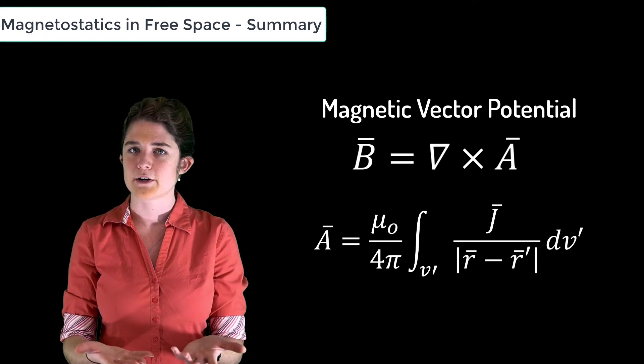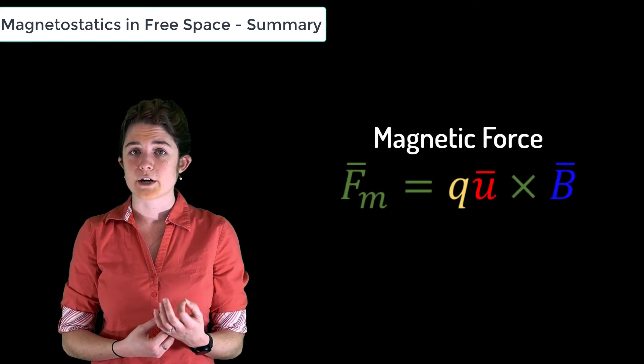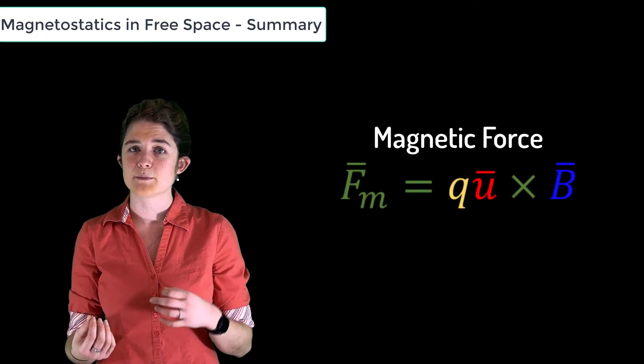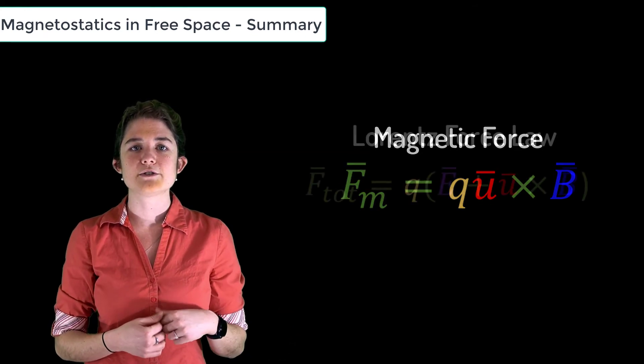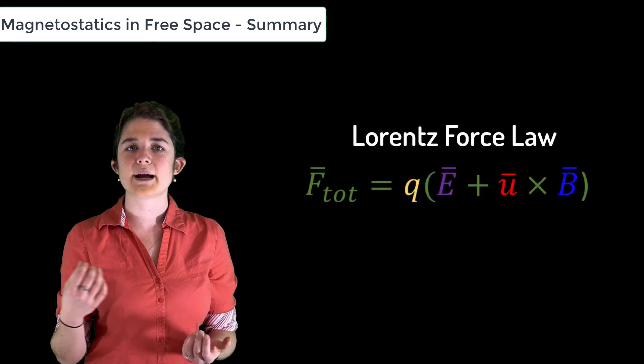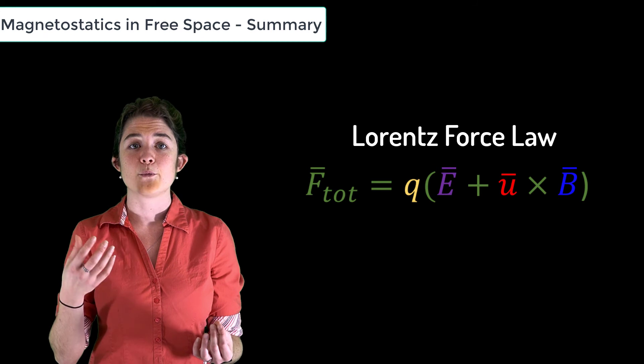We also discussed the magnetic force on a moving charge, which is equal to the charge multiplied by the cross product of the charge's velocity and the magnetic flux density. And we introduced the Lorentz force law, which combines the electrostatic and magnetostatic forces that act on a charge when both electric and magnetic fields are present.